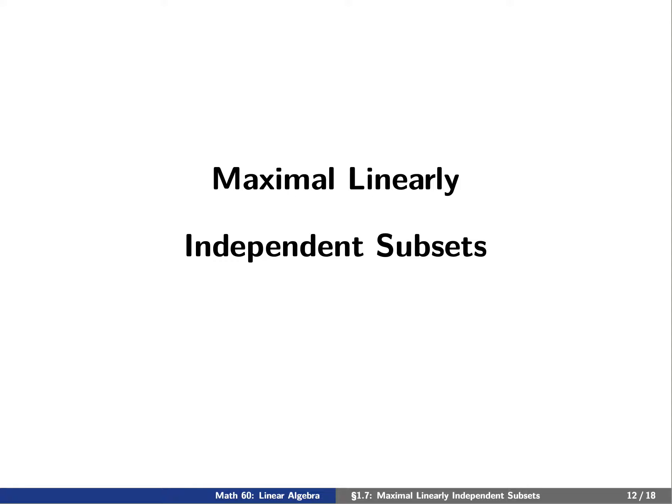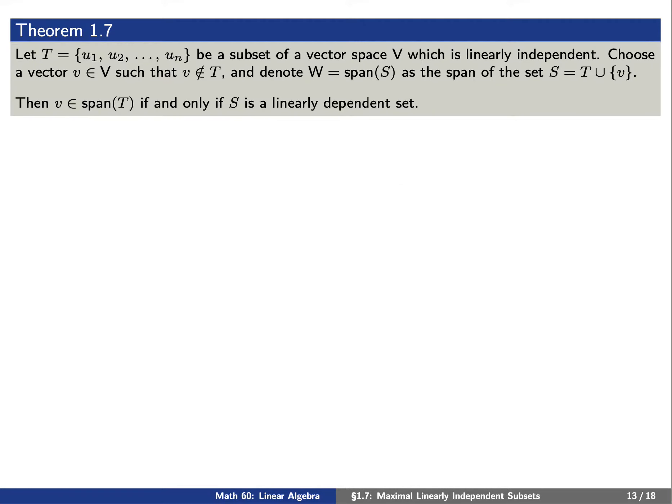Now let's discuss the concept of a maximal linearly independent subset. Recall theorem 1.7, which gives us a way of determining when a set S is linearly dependent. If T is a linearly independent subset of a vector space V, and we add a vector v not in T to create a set S, then S is linearly dependent if and only if v is in the span of T.